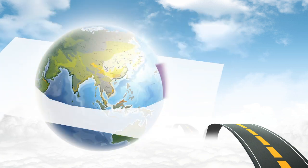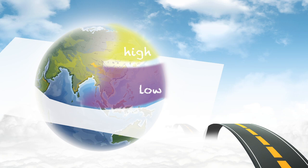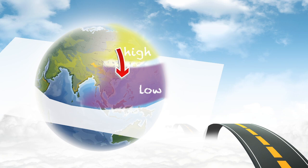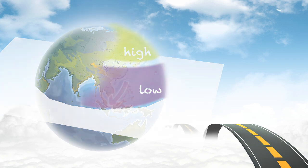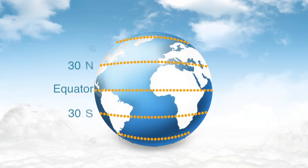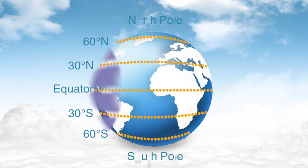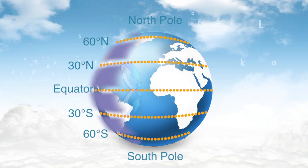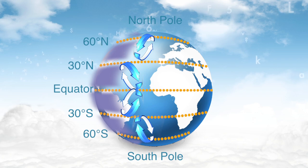North of the equator, this causes winds to move in a counterclockwise motion into low pressure, and move in a clockwise motion away from high pressure. Besides the little highs and lows you see on a weather map, there are large bands of high and low pressure across the Earth. In turn, this causes large bands of prevailing winds to be present across the Earth's surface.